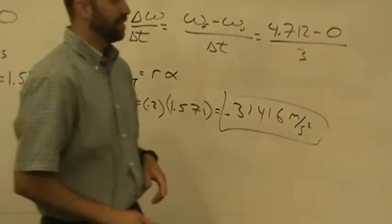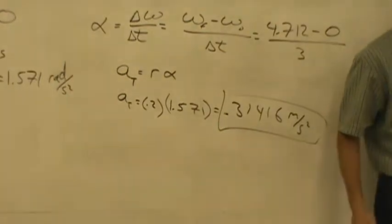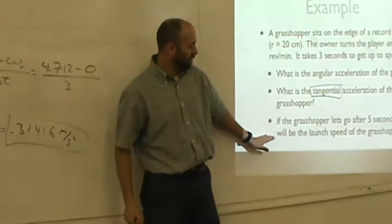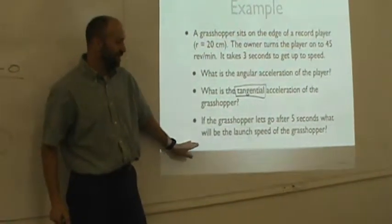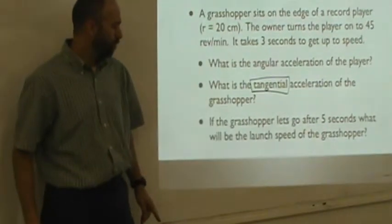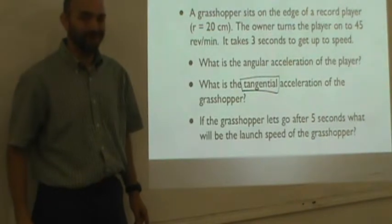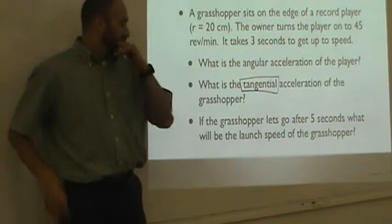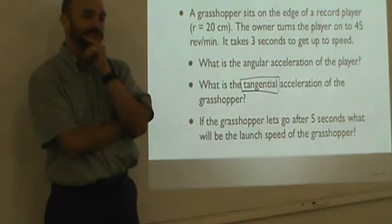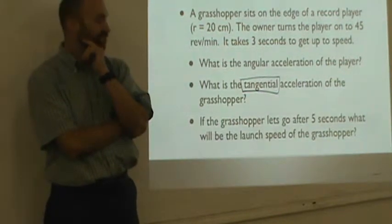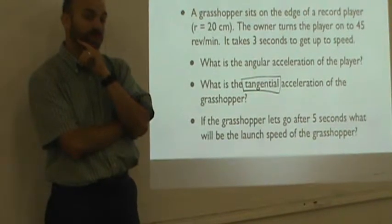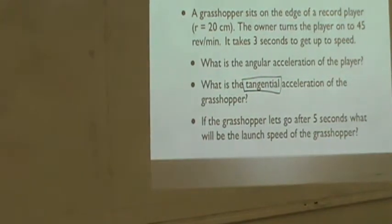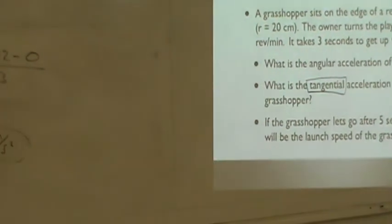We're moving on to part C. Part C. The question asks, if the grasshopper lets go after five seconds, what will be the launch speed of the grasshopper? This requires a little bit of a demonstration.